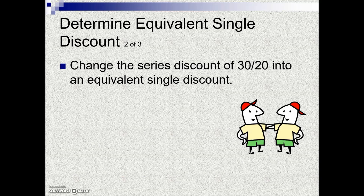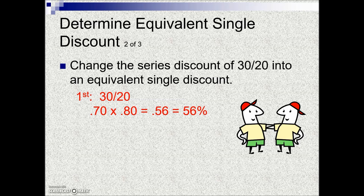In this next example, we're asked to change the series discount of 30% and 20% into an equivalent single discount. Same steps: we take the complements of each discount. 100% minus 30% gives us 70%, and 100% minus 20% gives us 80%. Multiplying those together gives us the product of the complements, which means the business is paying 56% of the list price.